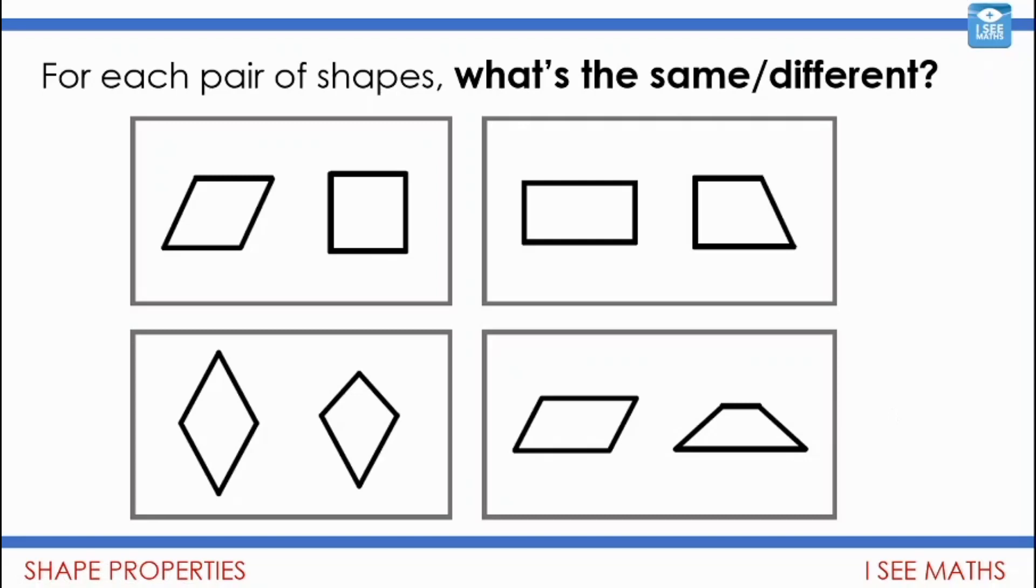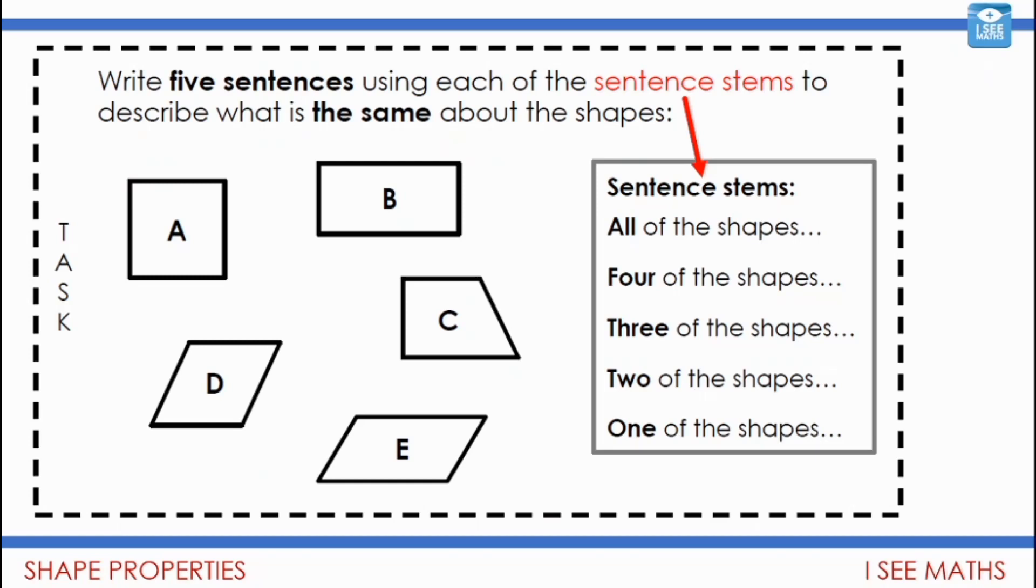That brings us on to our main task. So we're going to see if we can think of five different sentences using these sentence stems to describe what's the same about these shapes. So can you think of something that is the same for all of the shapes? What about something that's the same for just four of the shapes? And for three of the shapes? For two of the shapes? What about just for one of the shapes?